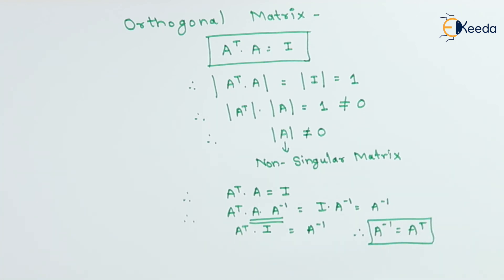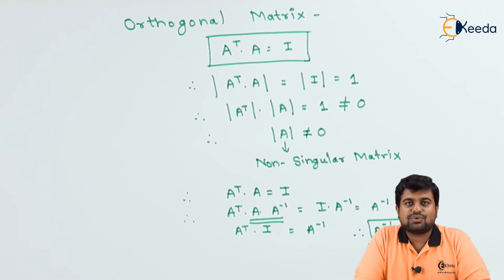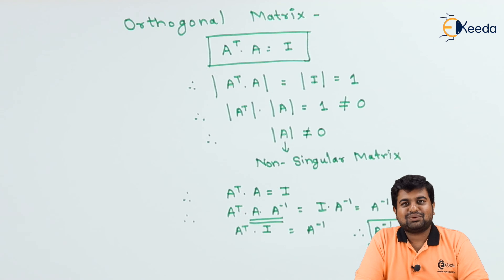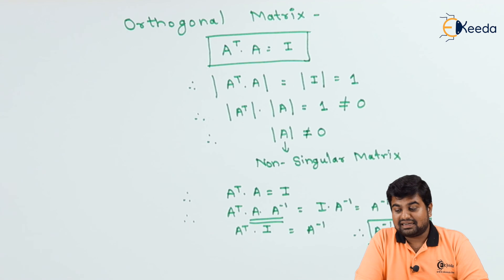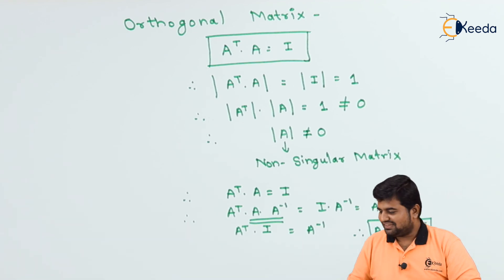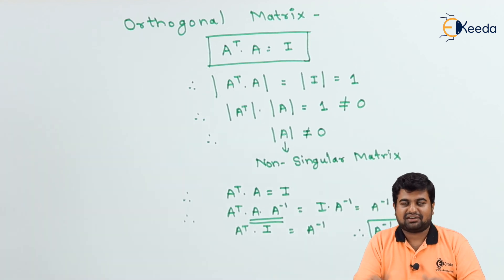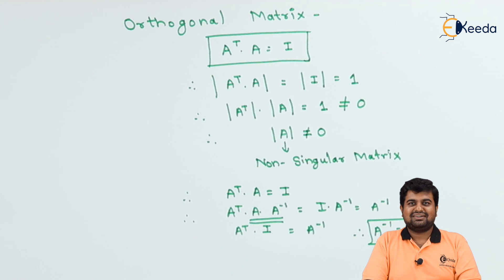In summary: for a unitary matrix, A-inverse equals A-theta, the transpose conjugate of the matrix. For an orthogonal matrix, A-inverse equals A-transpose, the pure transpose of the matrix. We don't need any complex operations — just take the transpose conjugate for unitary and the transpose for orthogonal. That was all about orthogonal and unitary matrices. Thanks for watching, stay tuned with eKIDA and do subscribe.